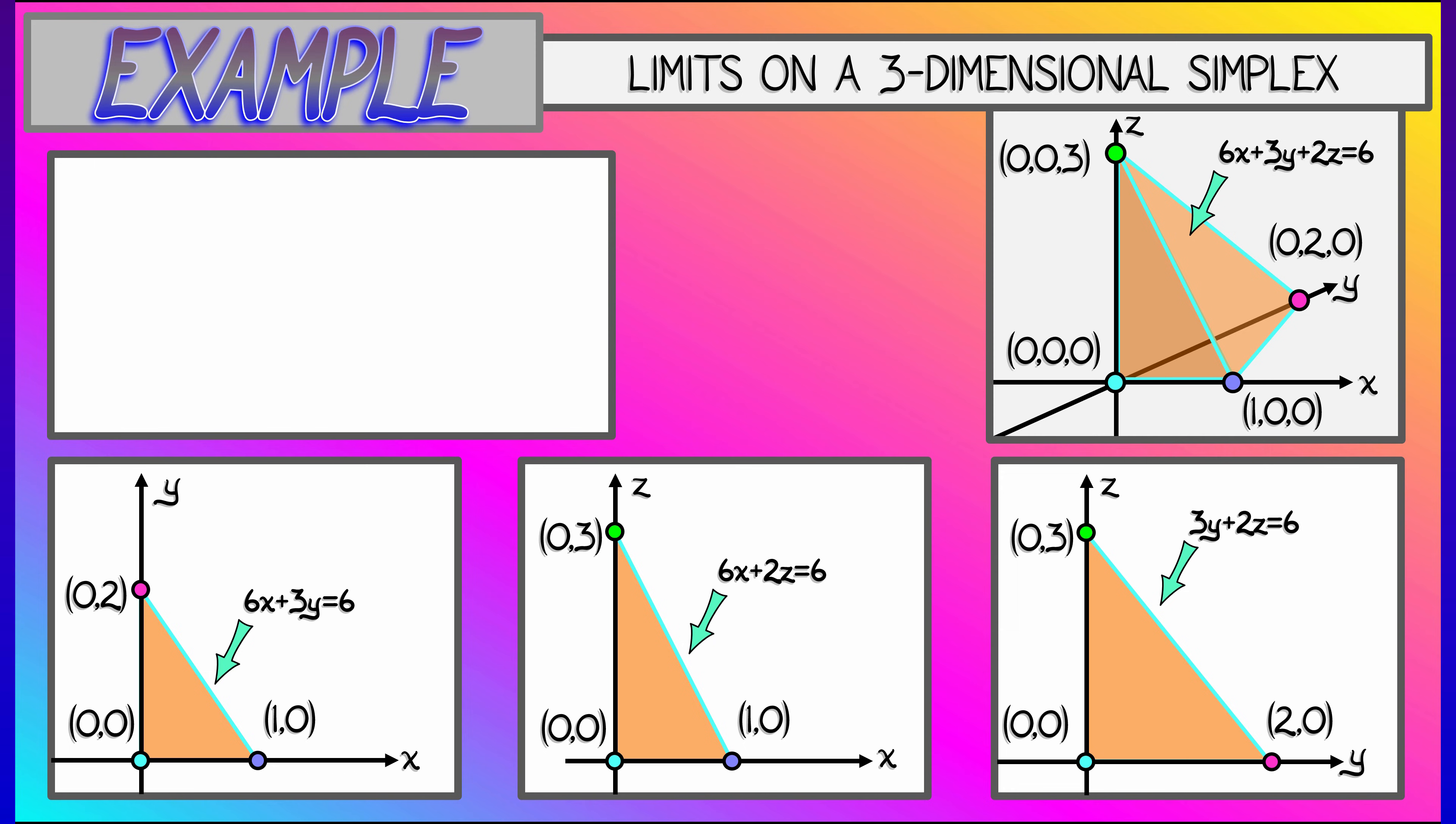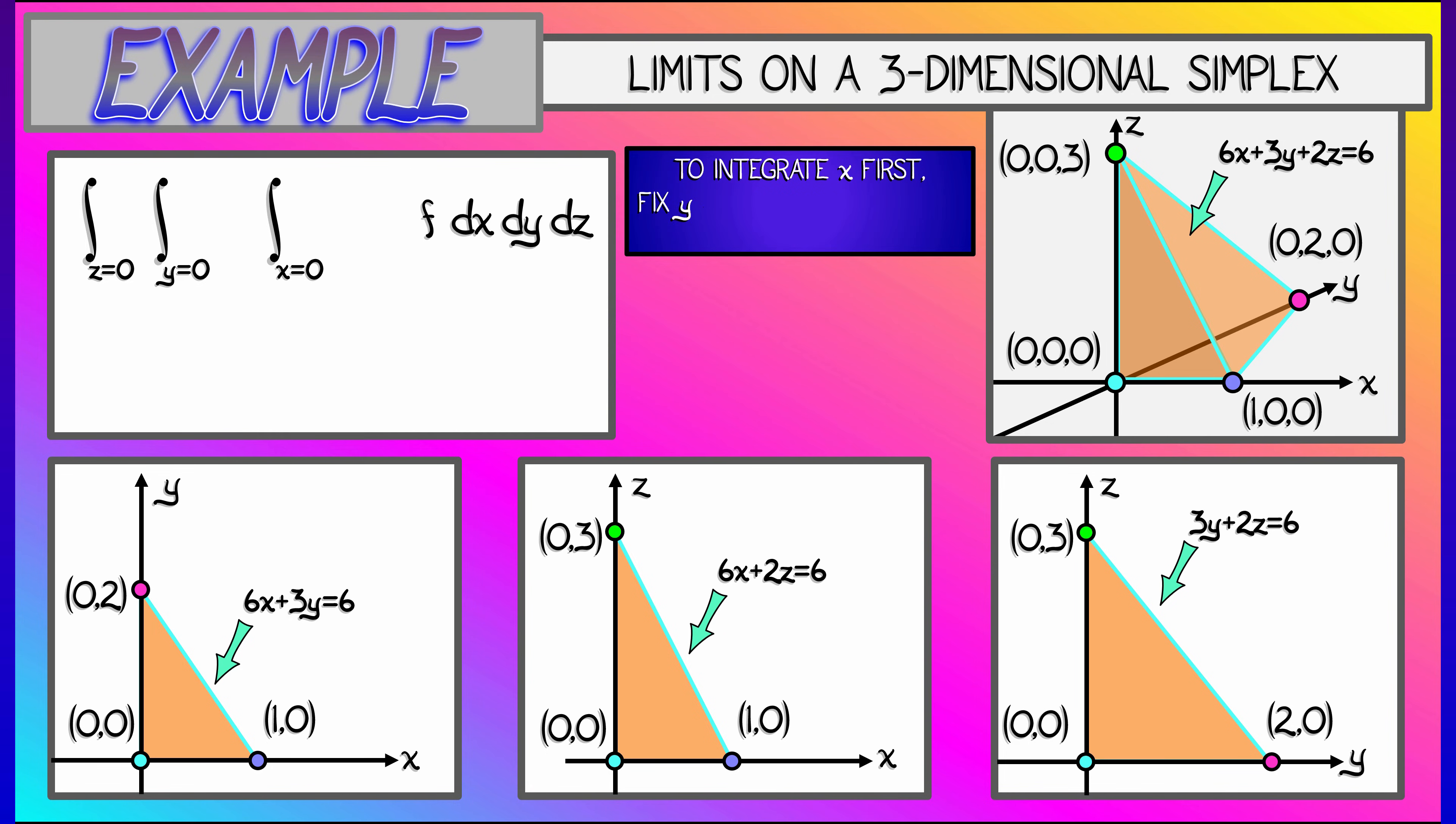Now, let's say we want to set up a triple integral in a particular order, let's say x, y, z. So we integrate first with respect to x, then with respect to y, then with respect to z. Now what we need to do is, given that we want to integrate out x first, we fix y and z to be a constant.